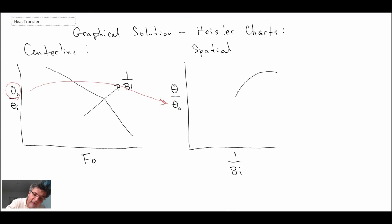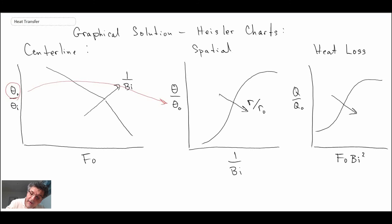And we have a number of different curves that change depending upon the radial location that we're interested in, and so that would be R over R naught—that's our R star value. And then finally heat loss, we have curves for that. Those are going to be Q over Q naught, Fourier Biot squared, the Biot number, and then we have this here. That's a function of the Biot number increasing in that direction. So those are the Heisler charts.